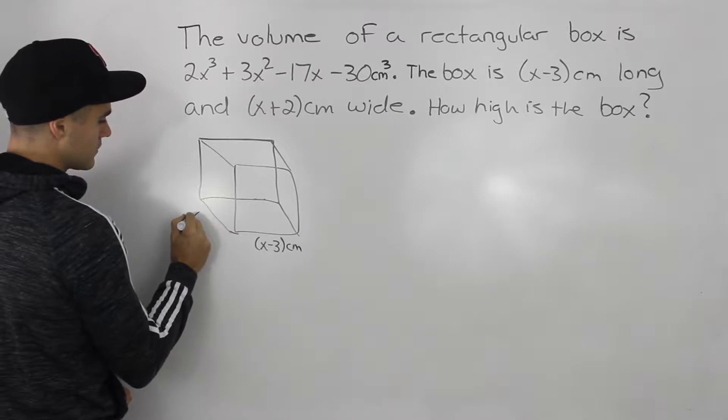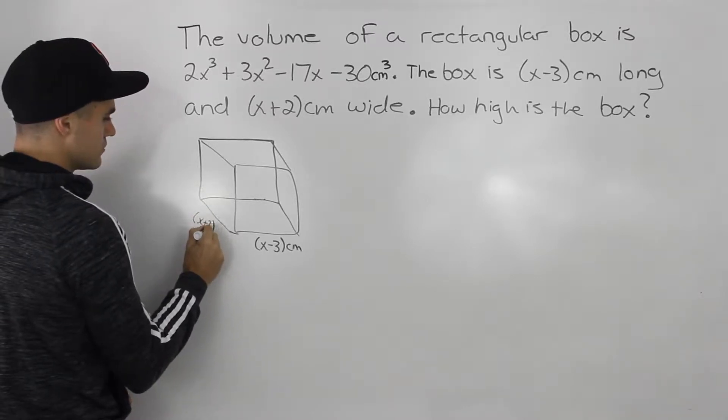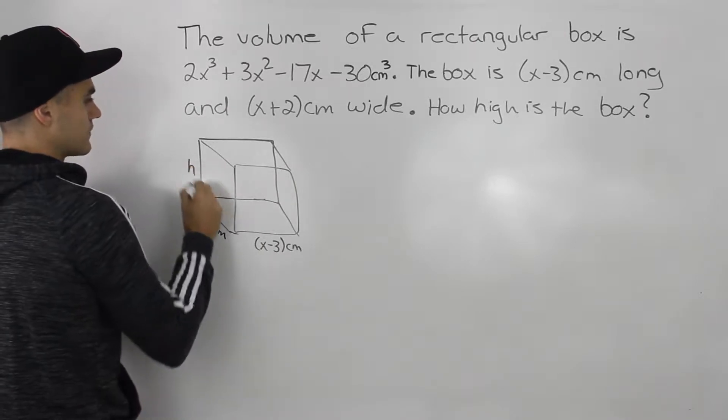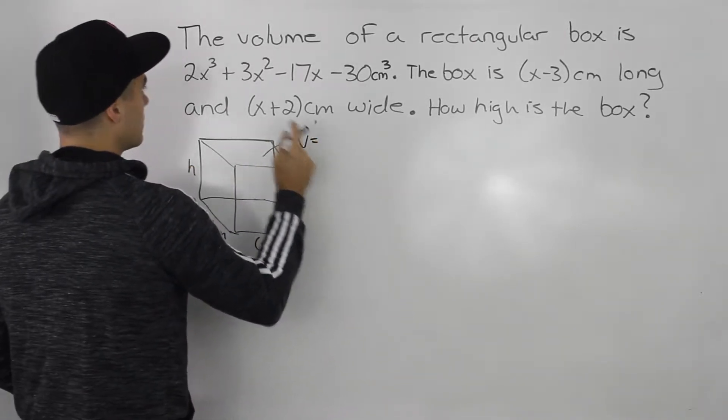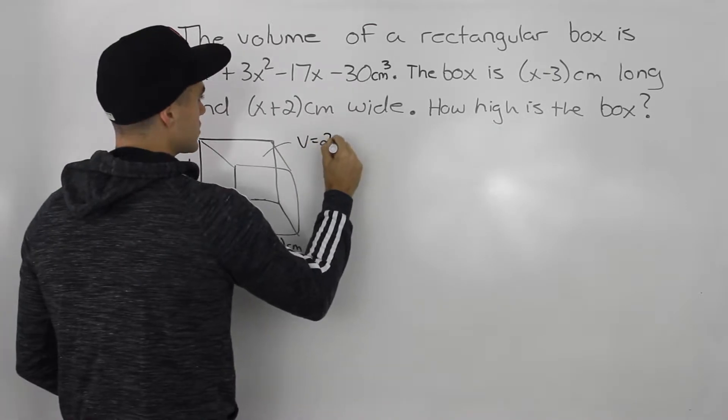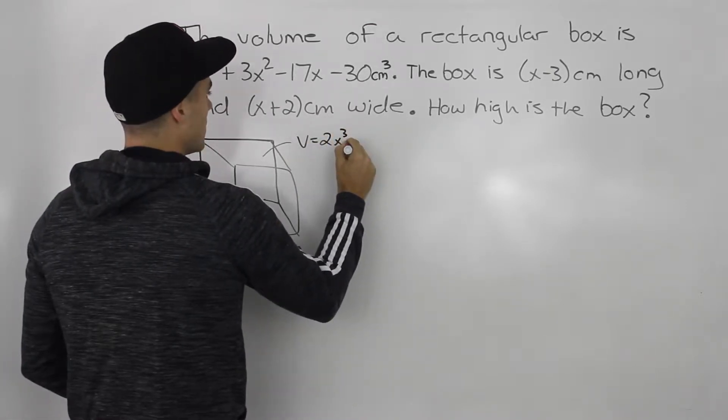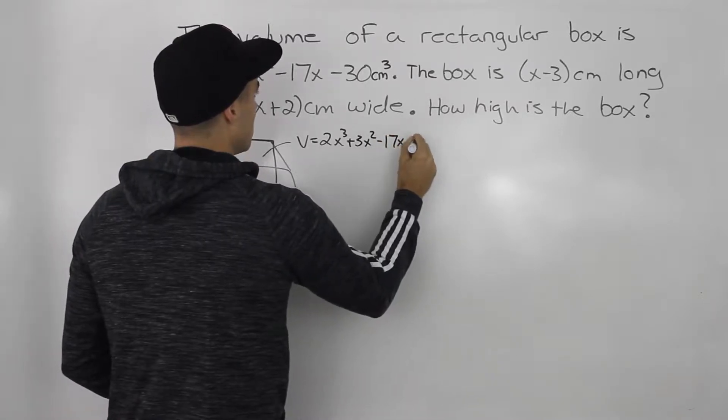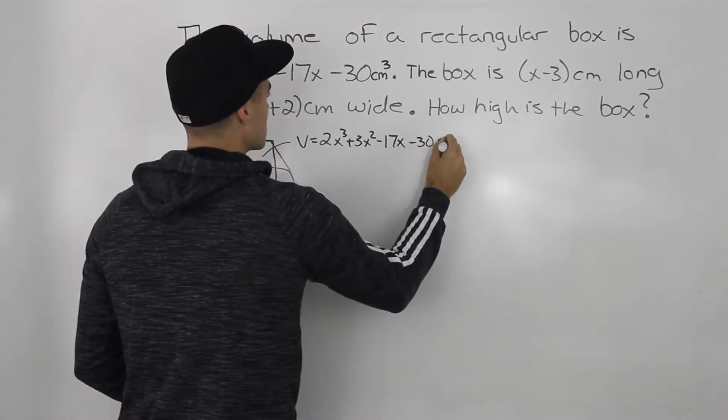We have the width of it, which is (x+2) centimeters. And they're asking us for the height. They also give us the volume of the box, which is 2x³ + 3x² - 17x - 30 cm³.